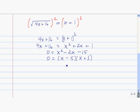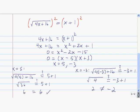The final thing to do is to check to see if either of these is an extraneous solution. Plugging each of them into both sides of the original equation, we find that 5 is a solution, but negative 3 is an extraneous solution. So our only solution to the original equation, square root of 4x plus 16 equals x plus 1, is x equals 5.